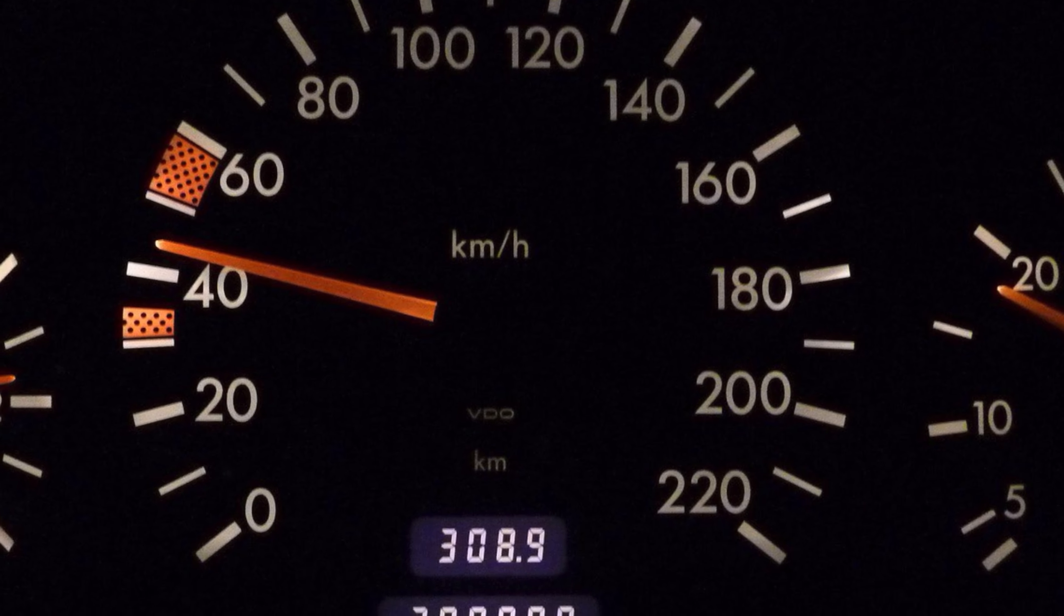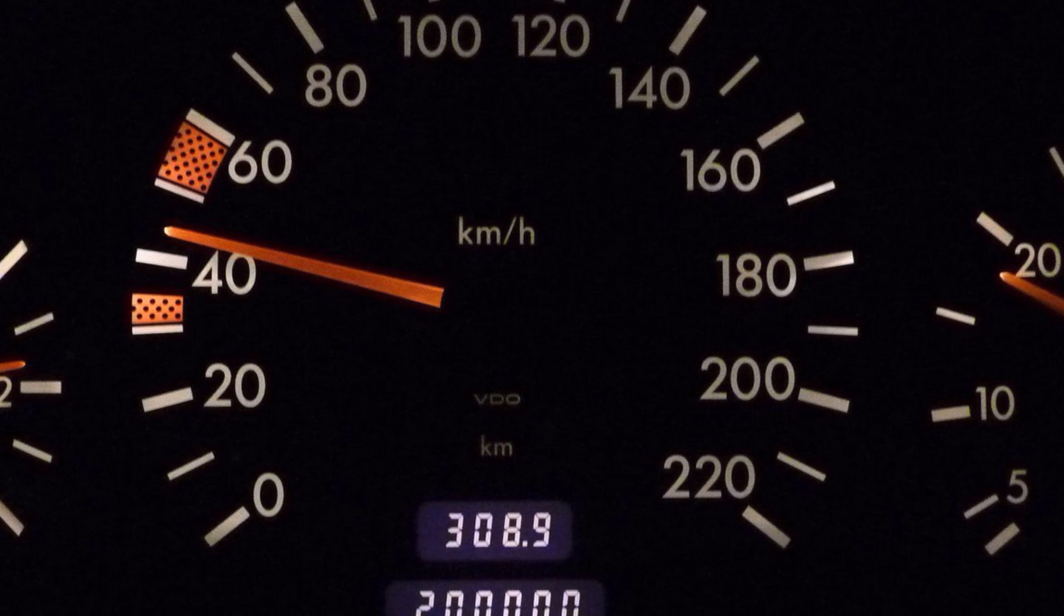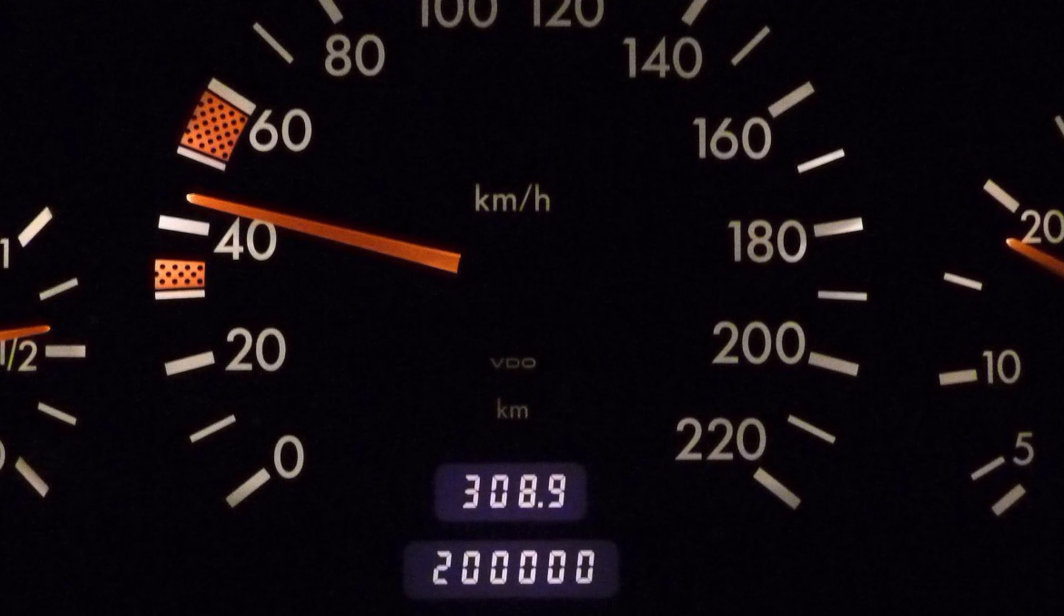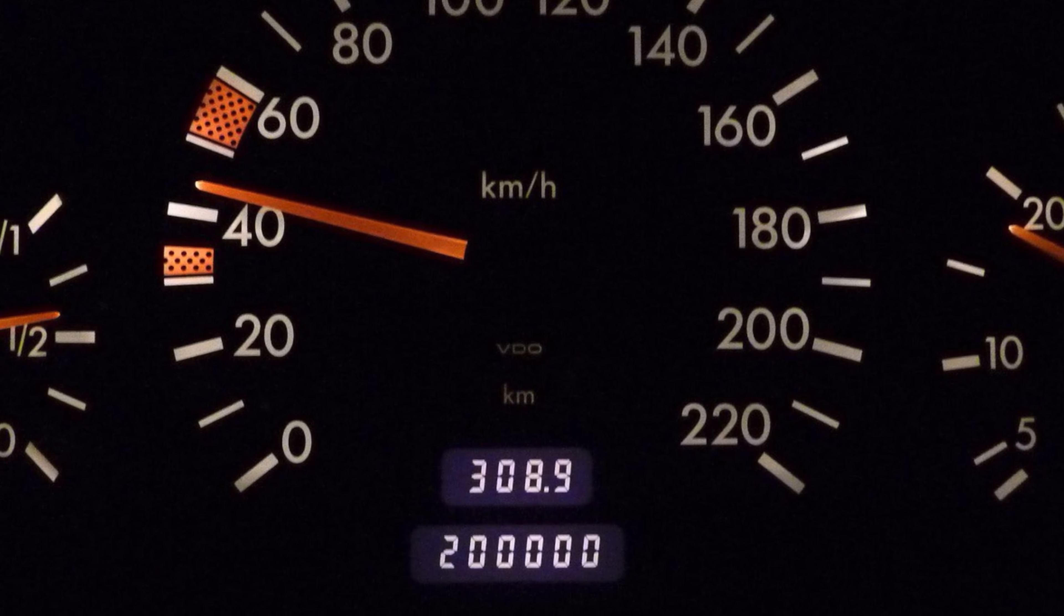Light takes about 8.5 minutes to reach the Earth from the Sun. The light travels at the speed of 3 lakh kilometers per second.